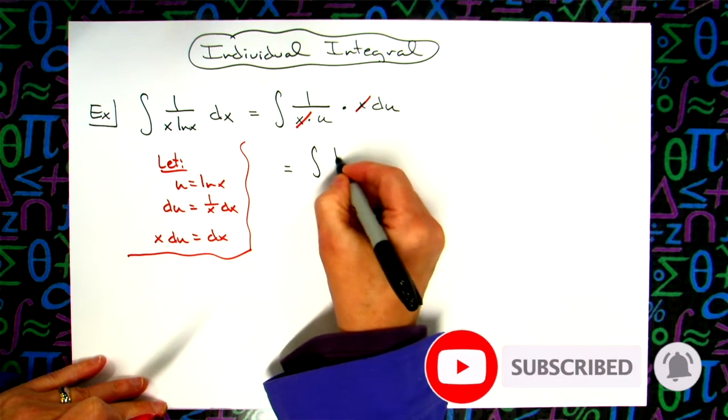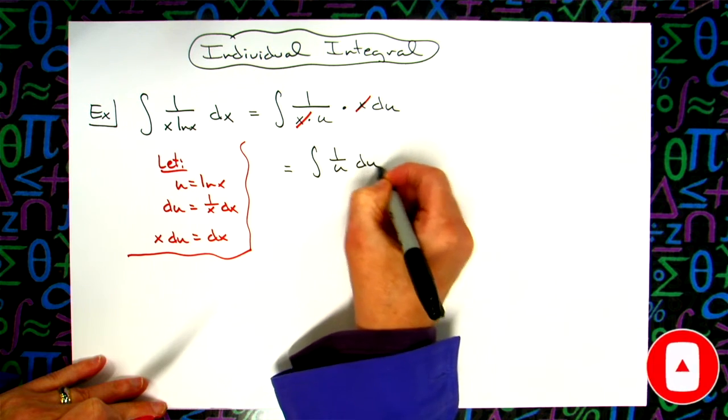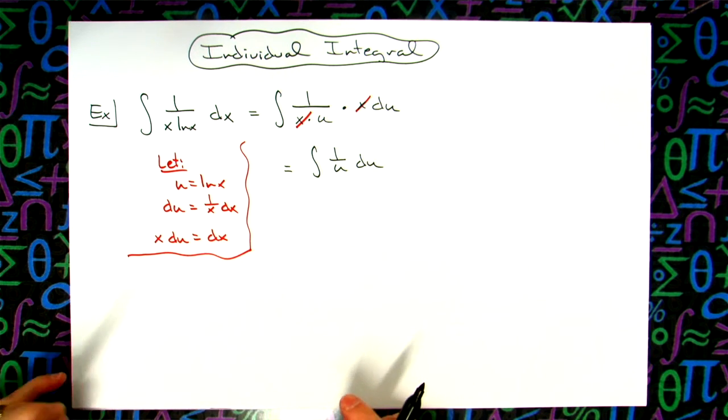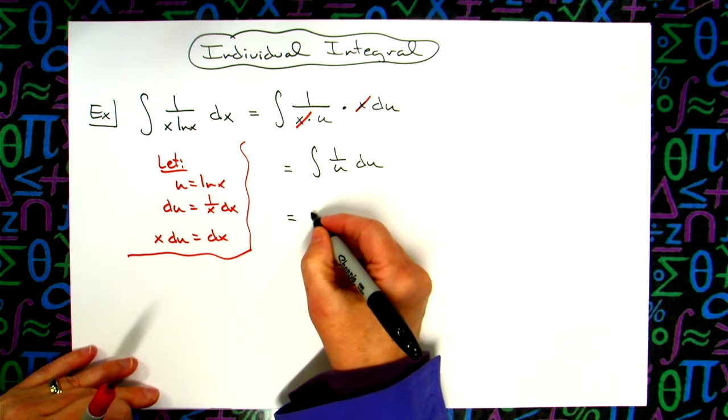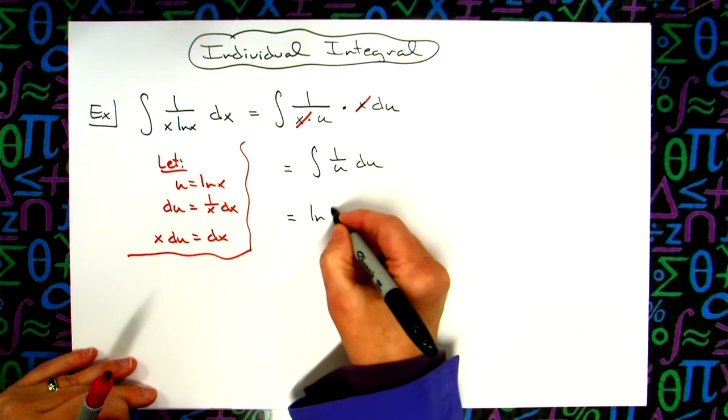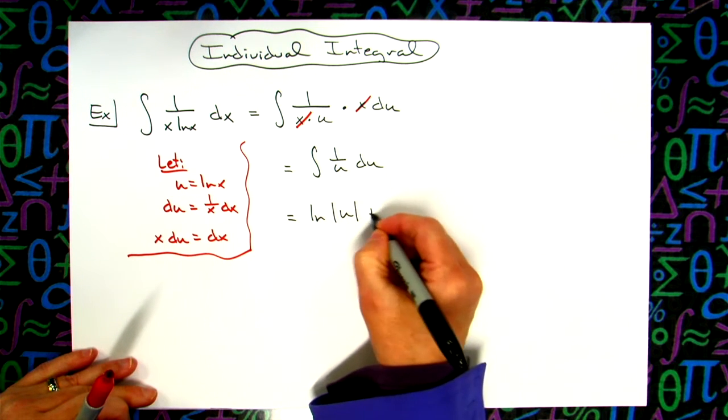The integral of 1 over u du. Alright, that one is one that you should have memorized. Alright, so you'll just have it known as the natural log absolute value of u plus c.